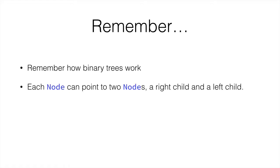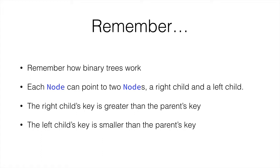We have a node that can point to two nodes. A right child whose key is greater than the parent's key and a left child whose key is smaller.